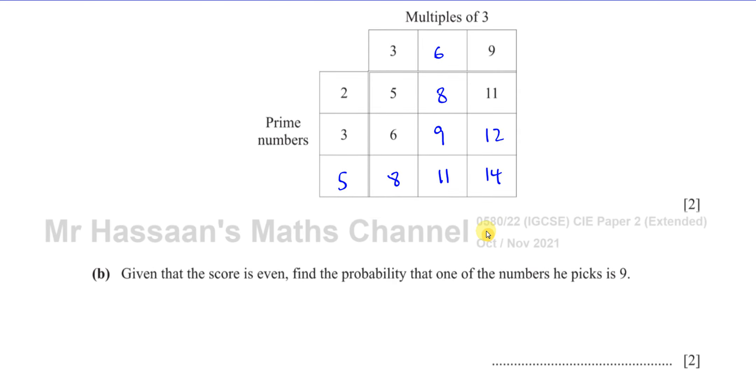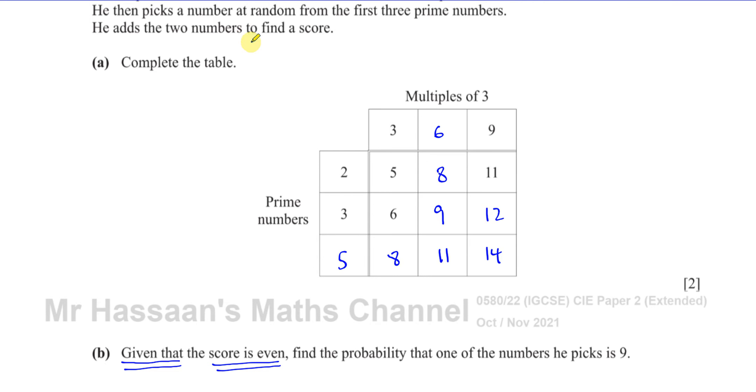Part B says: given that the score is even, find the probability that one of the numbers he picks is 9. This phrase 'given that' is very important in probability. It means we are restricting the sample to just what's mentioned after that. So we're not looking at all the possible outcomes as our denominator. We're looking at just the ones that are even. Let's highlight the even scores.